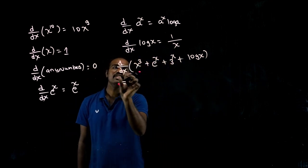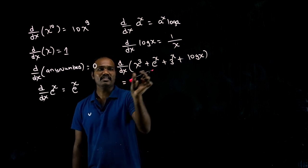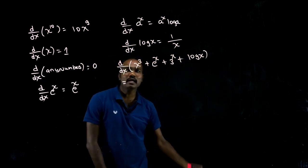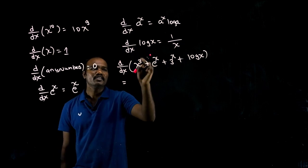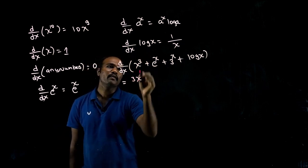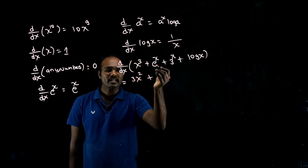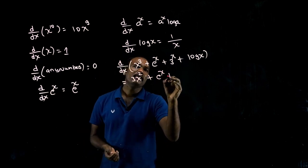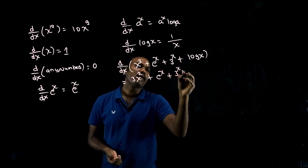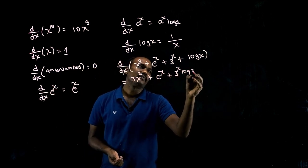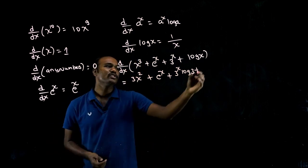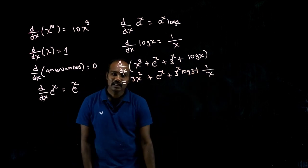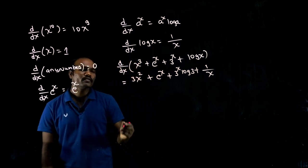So how did we solve? We have to differentiate each term one by one. x³ differentiation is 3x². Plus e^x differentiation is e^x itself. 3^x differentiation is 3^x log 3. Plus log x differentiation is 1/x. Is that simple?